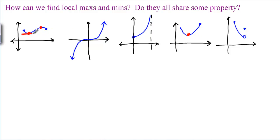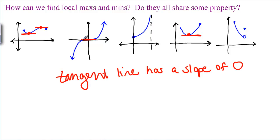They all seem to be where the graph flattens out before turning a corner or where the tangent line has a slope of 0. Now notice that this one has a tangent line with a slope of 0 as well and it's not a local max or min. But at least it seems like all the local maxes and mins occur when the tangent line has a slope of 0.